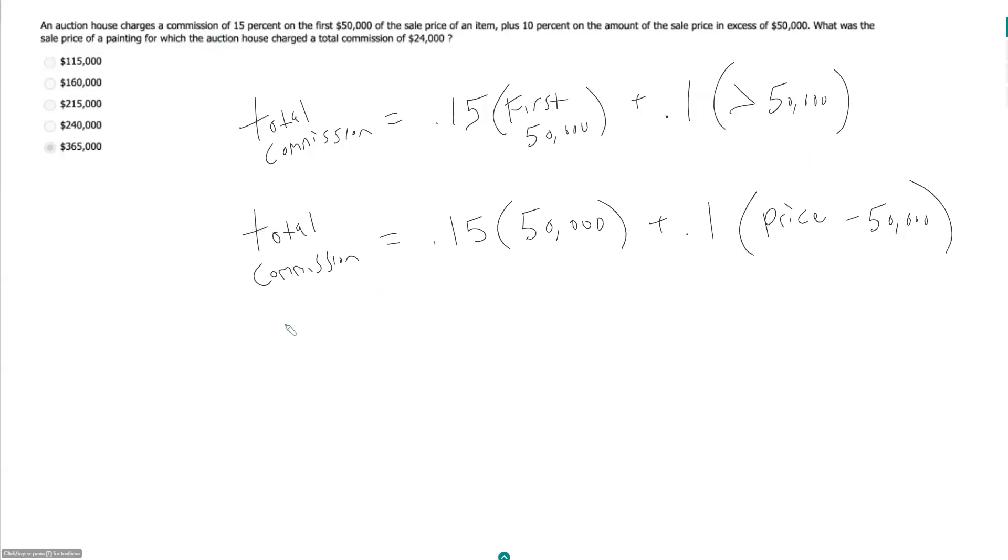My total commission is $24,000. My price here is what I'm solving for. So what is 15% of 50,000? 15 times 5 is 75, so 15 times 50,000 would be 75,000. So 15% of 50,000 would be 7,500.